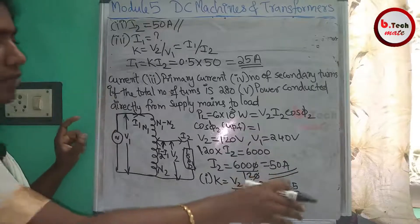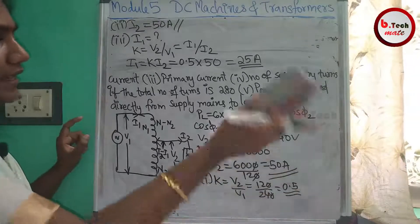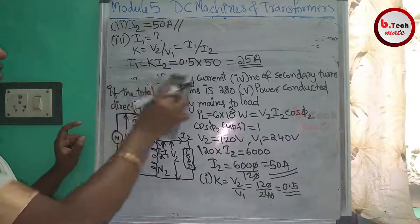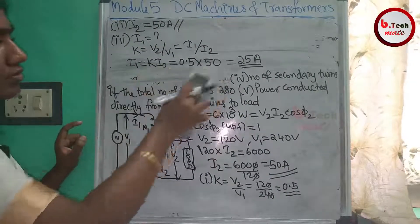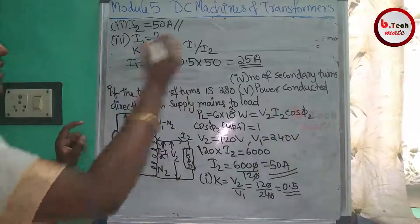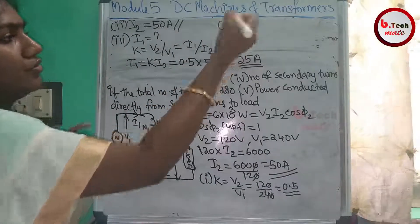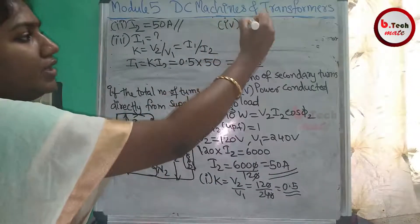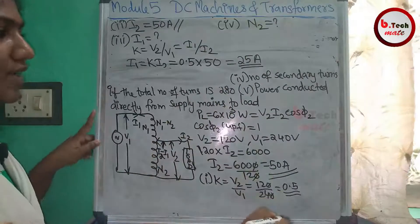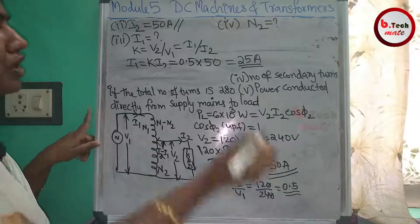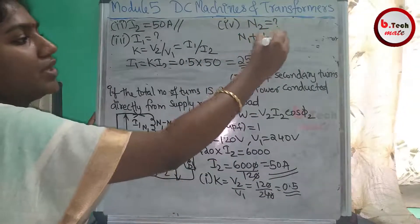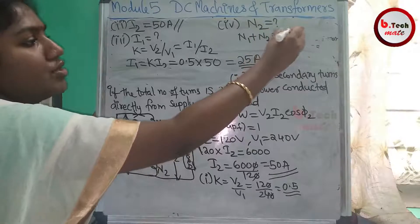Fourth part: number of secondary turns. The total number of turns is 280, so N1 plus N2 equals 280.